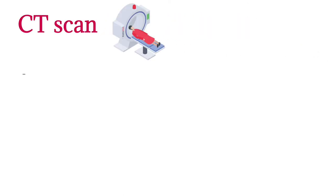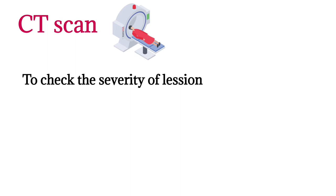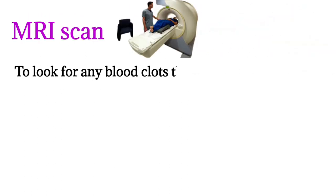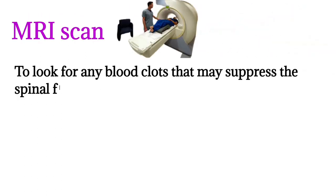A CT scan is done to check the severity of the lesion. An MRI scan is done to check for any blood clot that may compress the spinal fluid.